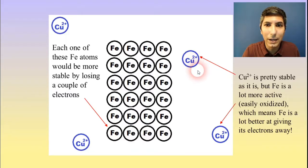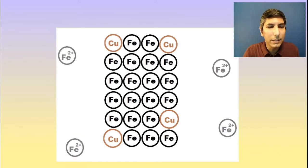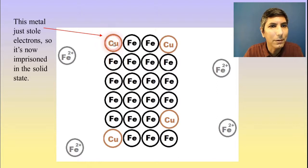And likewise, the copper two ions, those are fairly stable. But, as it turns out, iron is more active, which means iron would be a lot better at giving its electrons away than iron would. So what's going to happen? Well, basically something like this. And so essentially you can see that some of these metals and metal ions have essentially swapped places in the electrode in the solution. For example, these copper atoms here, they used to be in solution. They were swimming around, weren't they?